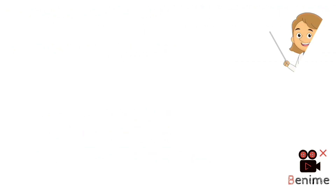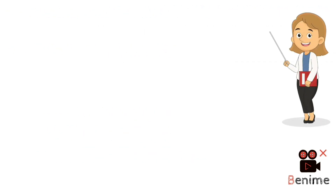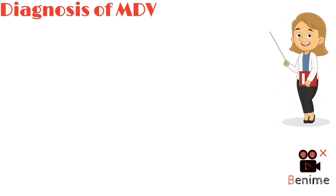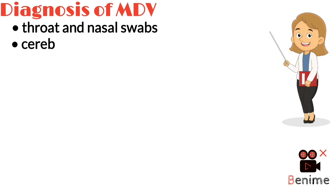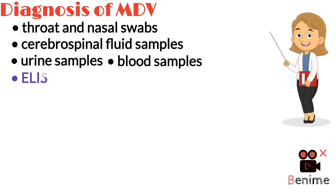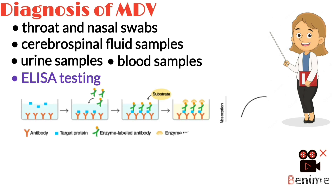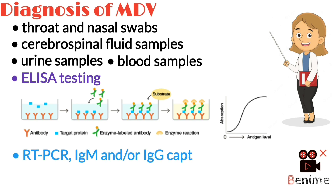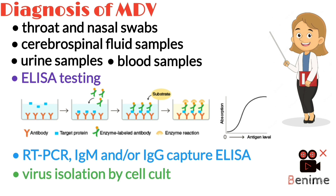An important question is how MVD can be diagnosed. MVD may be diagnosed using throat and nasal swabs, cerebrospinal fluid samples, urine samples, or blood samples. By ELISA testing — ELISA stands for enzyme-linked immunoassay — a commonly used laboratory test to detect antibodies in the blood. RT-PCR, immunoglobulin M or immunoglobulin G capture ELISA, and virus isolation by cell culture may also be used in diagnostic measures.